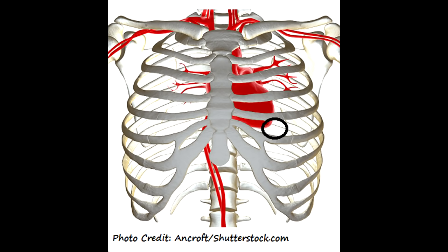Where do we find the apical pulse? We find it at the point of maximal impulse. That is going to be found at the fifth intercostal space mid-clavicularly, and it's found where the apex of the heart is.